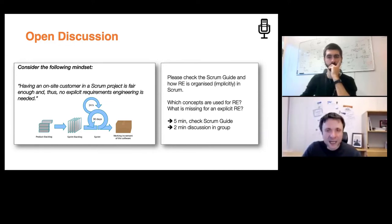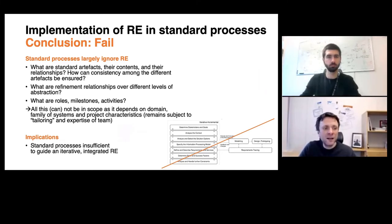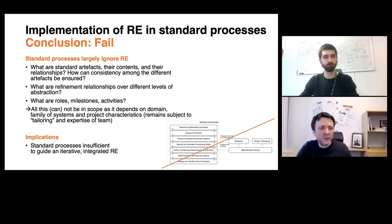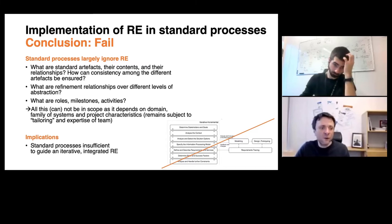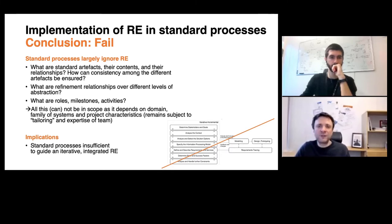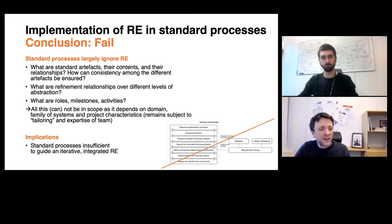Scrum is just one example; there are many more, but they all share these common denominators: requirements engineering is typically only considered implicitly, if at all, and in most cases is largely ignored. They don't give guidance on how to elaborate requirements over different levels of abstraction, how to refine them, how to classify them, or answer questions about roles, responsibilities, milestones, and artifacts from a requirements engineering perspective.